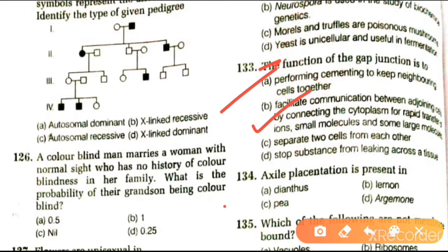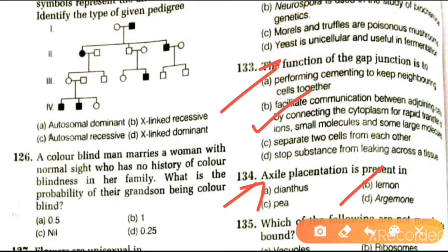Next question: axial placentation is present in Dianthus, lemon, or Arjun. The answer is lemon.